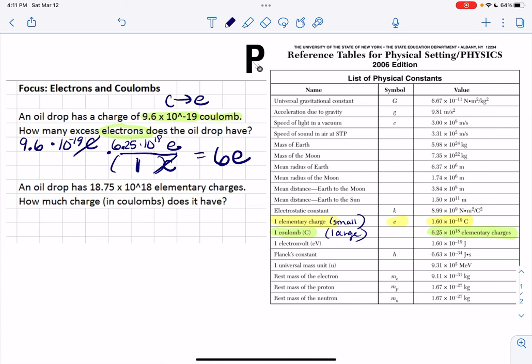Either way would work. So the same idea with this next one. It says an oil drop has 18.75 times 10 to the 18 elementary charges. How much charge in coulombs does it have?